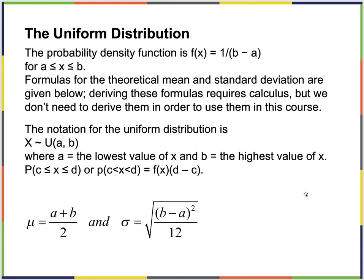The probability density function for the uniform distribution is 1/(b-a), where a < x < b, so the domain is from a to b. The mean is going to be (a+b)/2 — the average, the midpoint of the two values — because the height of this function is 1 over that distance. So when I multiply (b-a) by 1/(b-a), I get 1, and it's always going to be a rectangle.